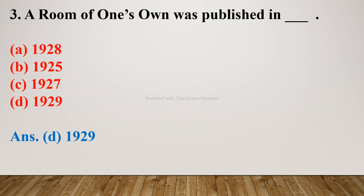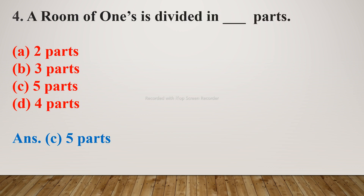Question number 3: A Room of One's Own was published in — options are A. 1928, B. 1925, C. 1927, D. 1929. The right answer is D. 1929. Question number 4: A Room of One's Own is divided in blank — fill in the blanks — parts. Options are A. 2 parts, B. 3 parts, C. 5 parts, D. 4 parts. The right answer is C. 5 parts.